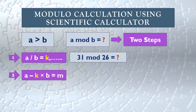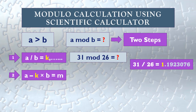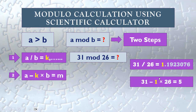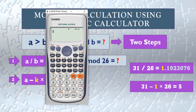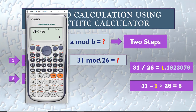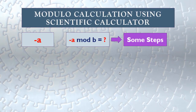For example, if we have 31 mod 26, we divide 31 by 26. Then we take the integer part only from the result, multiply it by 26, and subtract it from 31. It gives us 5. So 31 mod 26 equals 5.